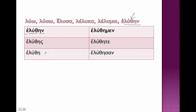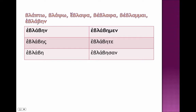Not all stems end in theta in this principal part. A few, like blopto, don't have a theta at all — eblabein — but they conjugate exactly the same way: epsilon augment, sixth principal part, and ending: eblabein, eblabes, eblabe, eblabemen, eblabete, elabesan. Some people refer to these as strong or second aorist passives. When learning Greek, I don't find it useful to make this distinction, because unlike the strong and weak aorists in the active voice, these don't conjugate any differently — same endings, augment, sixth principal part. There's not really a meaningful distinction for our purposes.